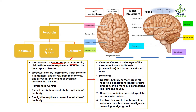The cerebrum is the largest part of the brain. It is divided into two hemispheres — a left hemisphere and a right hemisphere — connected to each other by the corpus callosum.